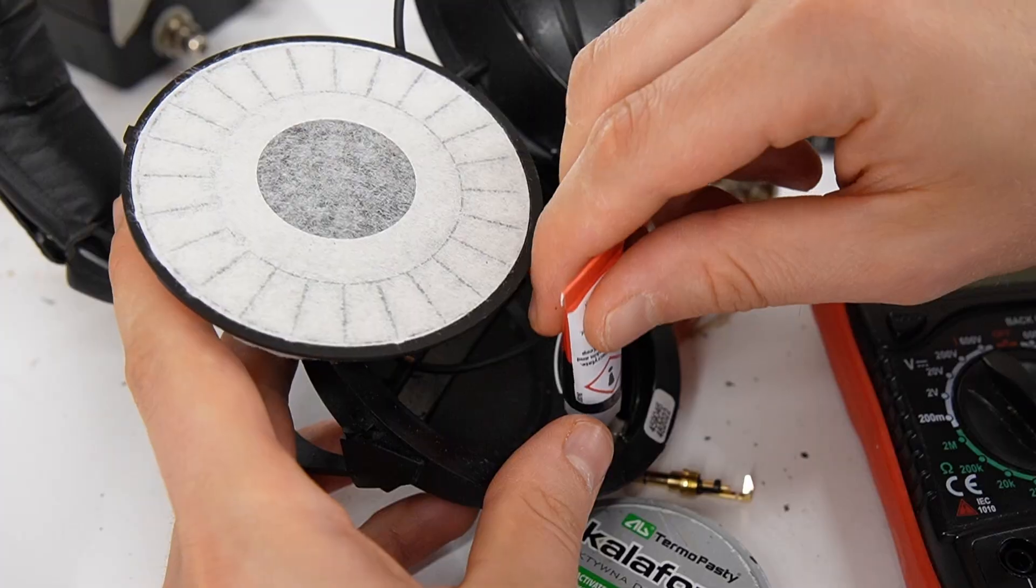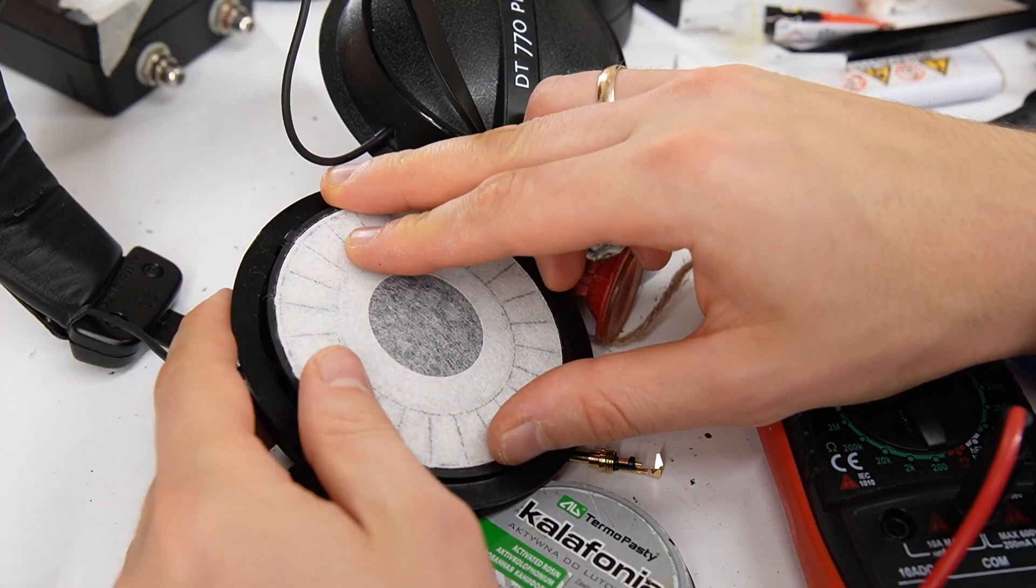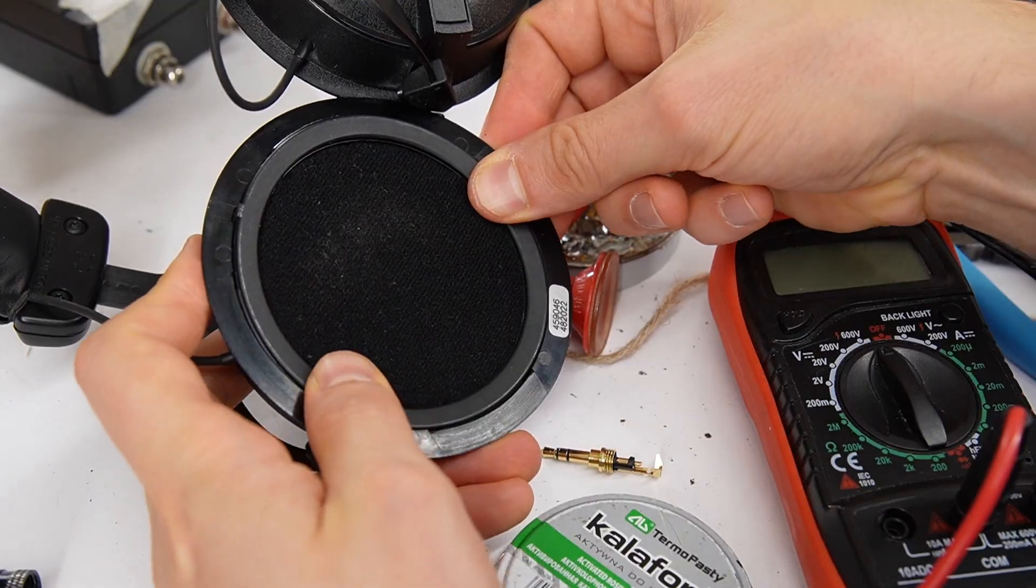Then add more superglue from the inside, because you don't want the socket to ever pull out. Assemble the headphones back together, including the foam filter and the locking ring.